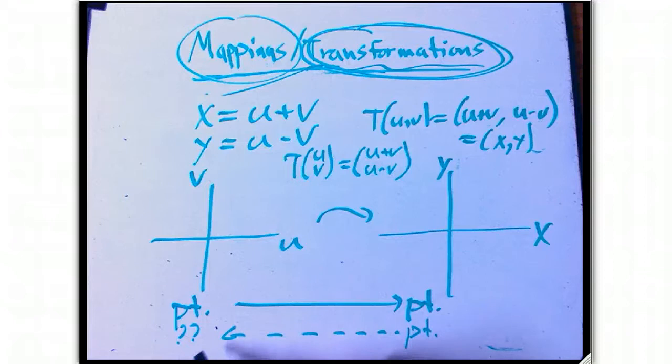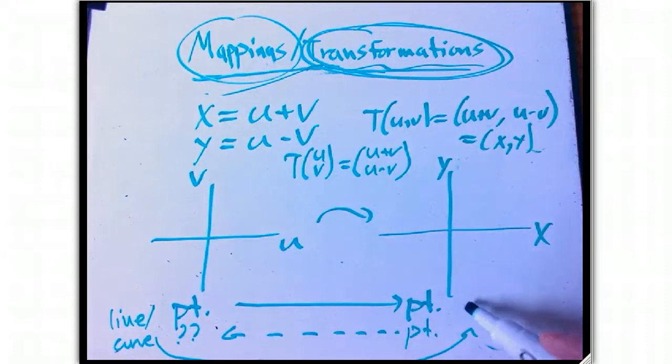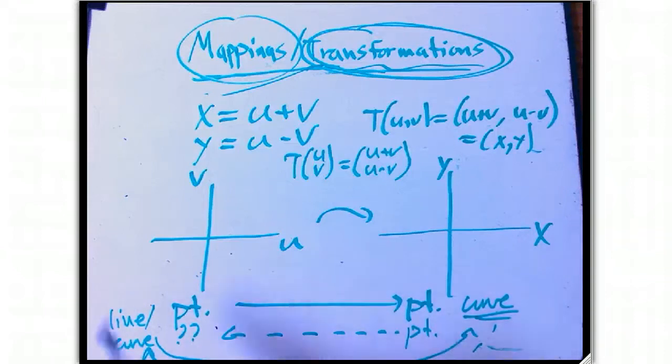You can also do the same thing with a line or a curve. Look at what that goes to over here. Probably it's going to be some sort of line or curve, unless it's a special kind of case. You can also look at, well, what if you look at a line or curve here, did that come from some line or curve or something more complicated over here? So those are both very useful. And it turns out that going the backwards direction is going to be the more crucial for us when we use this in terms of changing variables and integrals, which is one of the big applications we're going to use it for.